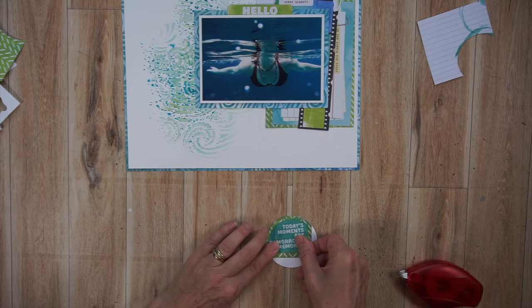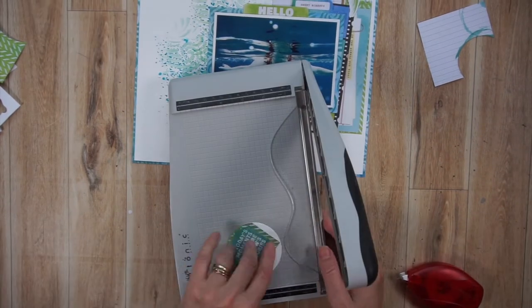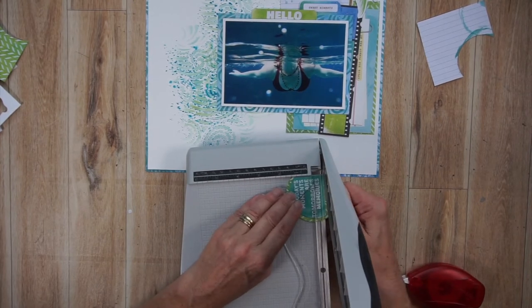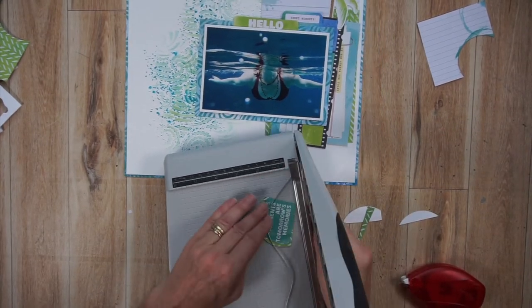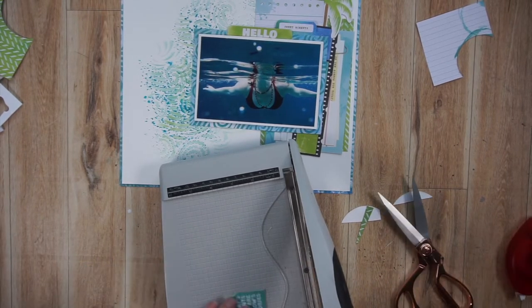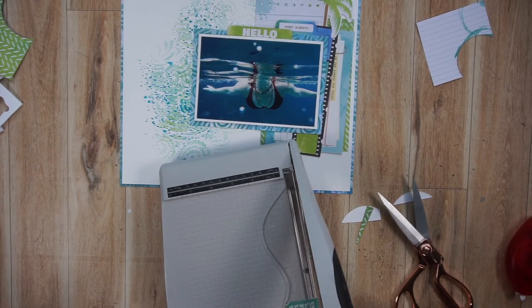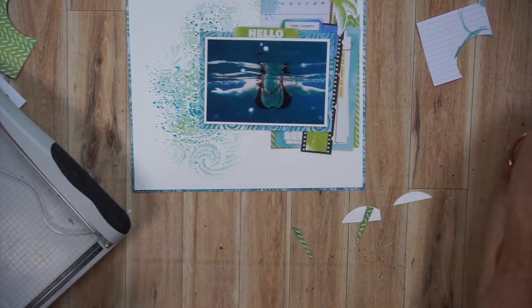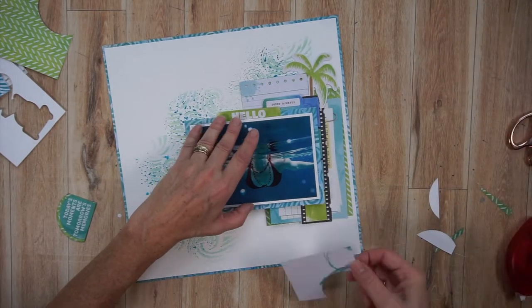Then essentially I'm going to place it back in that journaling box where I cut out that circle but it's going to be popped up on foam adhesive and it's just going to stand out a bit more as a title and you may have noticed as well I did add a bit of ink around that title area as well and I used this same ink that I used on the foundation page the color I used was balmy blue.